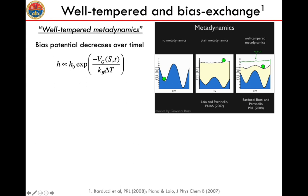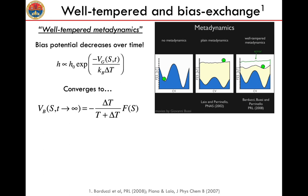In the exponential formula for the height of the Gaussians, you have a factor delta-T that has the units of a temperature. This so-called bias factor is used to define to what extent we want to enhance the sampling in terms of the overall barriers we want to cross. The bias factor is defined as the ratio between delta-T and T plus delta-T, and even using well-tempered metadynamics you can extrapolate the free energy of the process you are investigating.